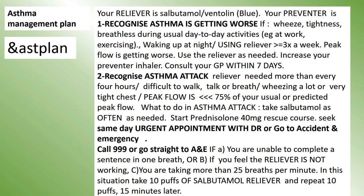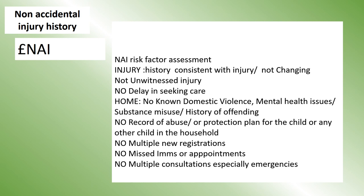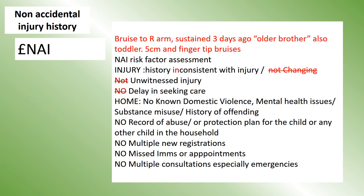Asthma safety netting is so important — there are still so many patients who don't understand how to use their treatments and when to seek help. This is my asthma management plan edited for a particular patient. This is a history for non-accidental injury in a child and the things to remember to consider, and here's an example of it completed for a child who sustained a supposed injury to the arm caused by the older brother.